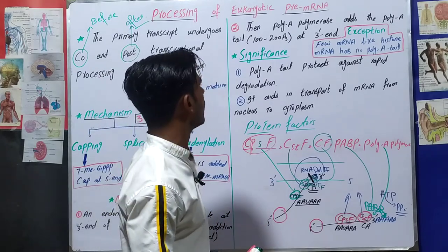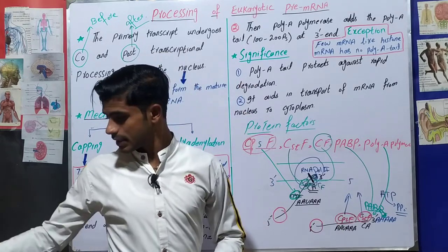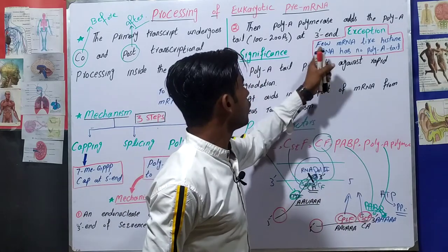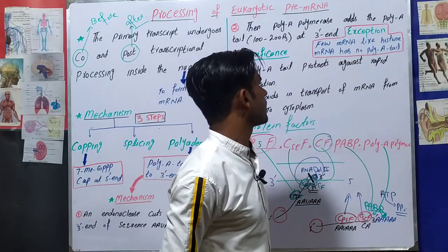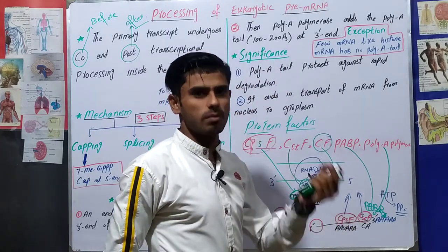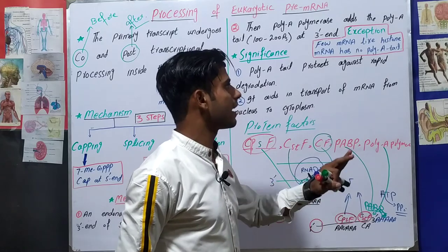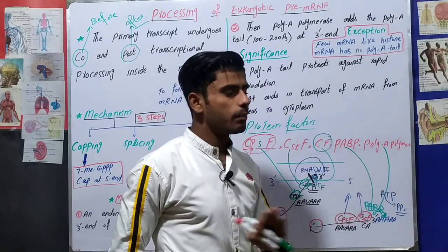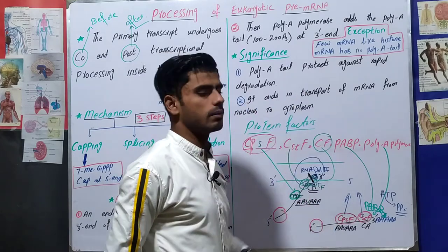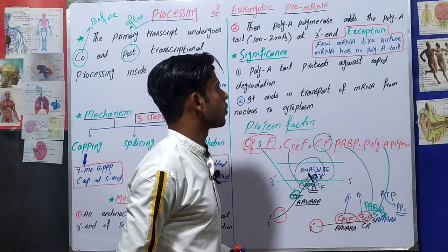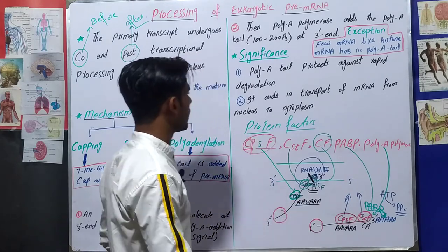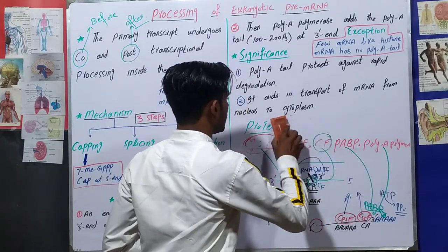Before discussing significance, there is an exception: a few eukaryotic messenger RNAs — like histone mRNA — have no poly-A tail. For histone messenger RNA, polyadenylation does not happen. This is an exception to remember, as it may appear in exams.